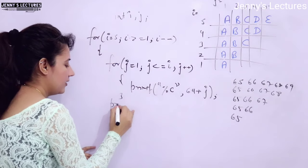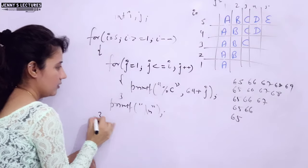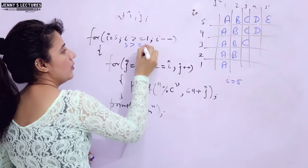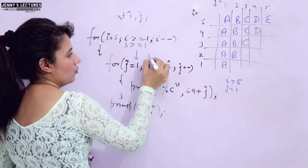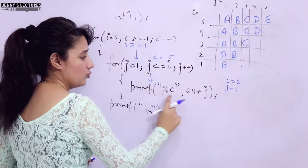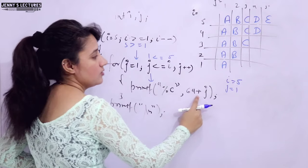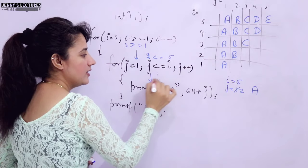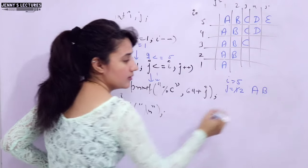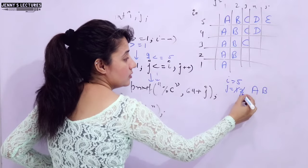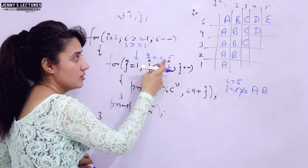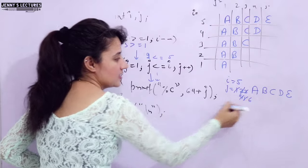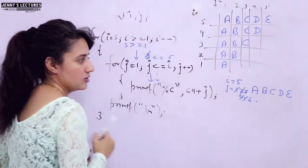Let me do a dry run. First, i is initialized to 5. 5 ≥ 1 — condition true — we enter the loop. j is initialized to 1. 1 ≤ 5 — condition true. We print 64 + 1 = 65, which is 'A'. j becomes 2: 64 + 2 = 66 — 'B' is printed. This inner loop executes 5 times total, printing A, B, C, D, E. When j becomes 6, the condition is false — we exit the loop. Backslash n moves the cursor to a new line.